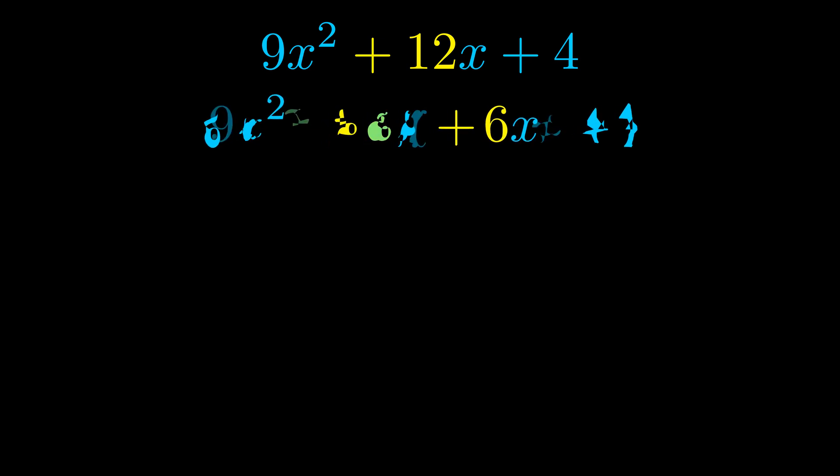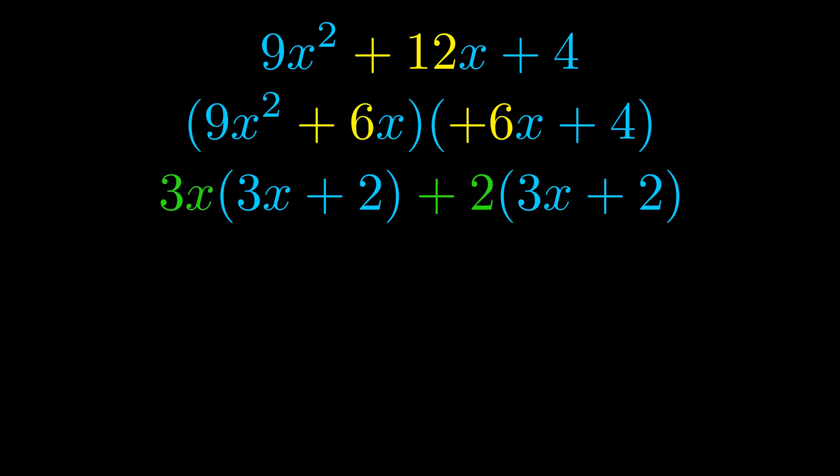Once we've done this we go ahead and we put parentheses around the first term and the last term. And we do that so that we can take the greatest common factor out of both terms. We can see the greatest common factor is now outside in green.